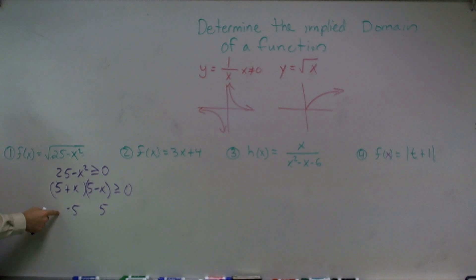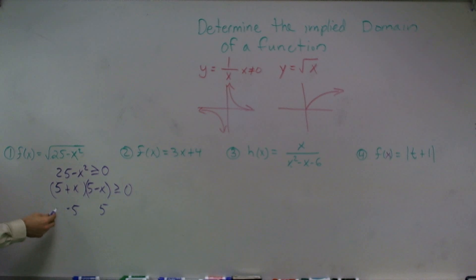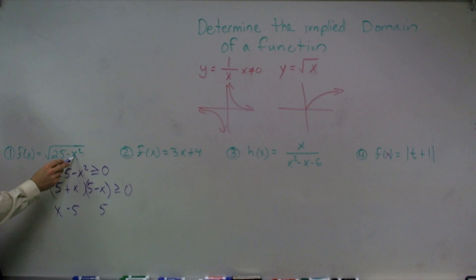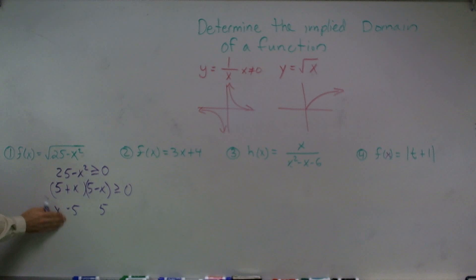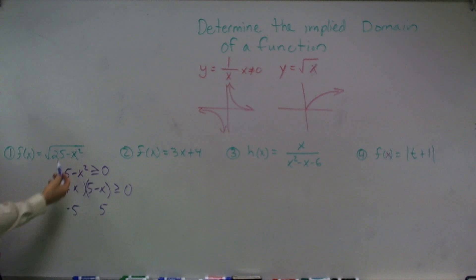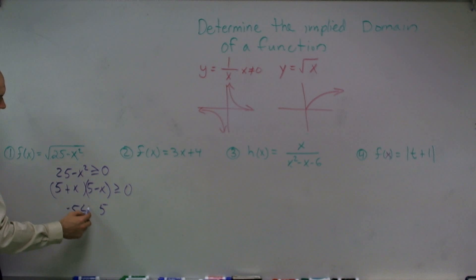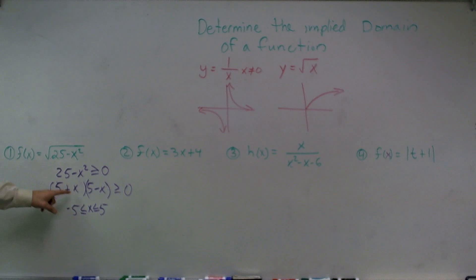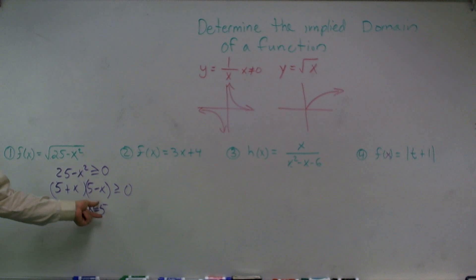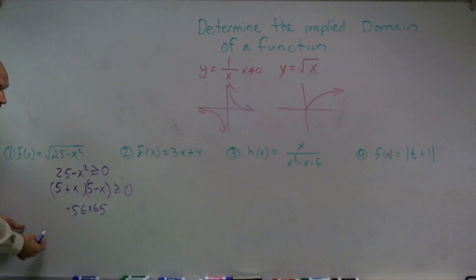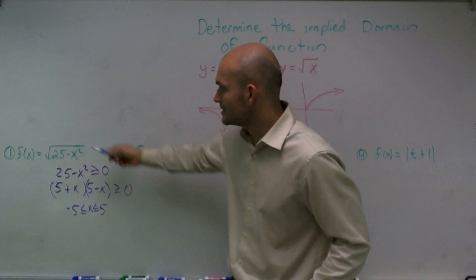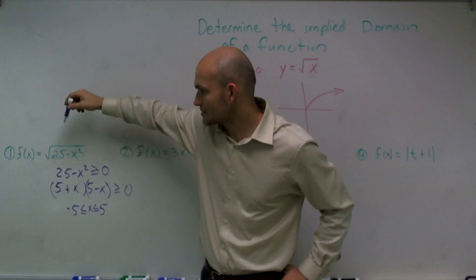So let's pick a number less than negative 5 and see if it works. Let's pick negative 6. Negative 6 squared is 36. 25 minus 36 is negative, so that's not in my implied domain. Let's pick 0, which is between negative 5 and 5. 0 squared is 0. 25 minus 0 is 25, so that works. Then let's pick positive 6. 6 squared is 36. 25 minus 36 is again a negative number. Therefore, the value of my function for my implied domain has to be between negative 5 and 5. Any number greater than 5 or less than negative 5 is not going to be a part of my implied domain because it's going to make my root negative.